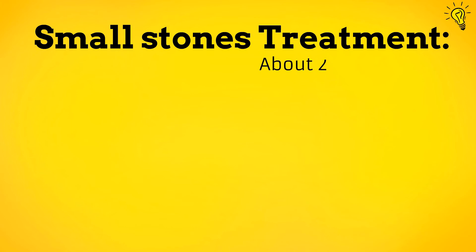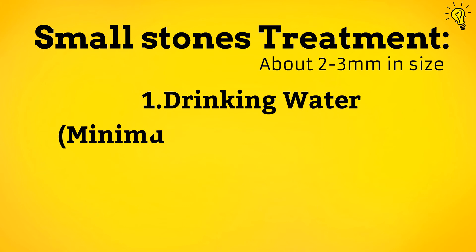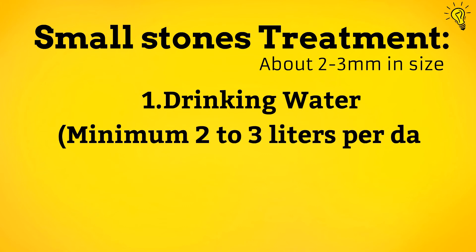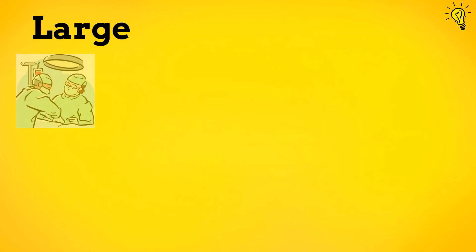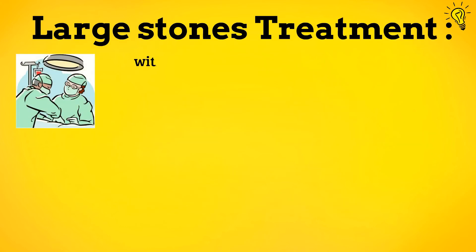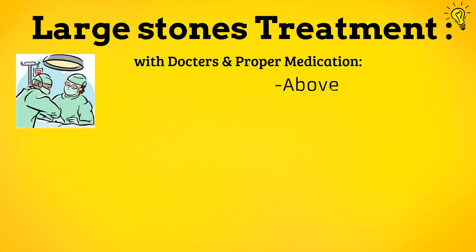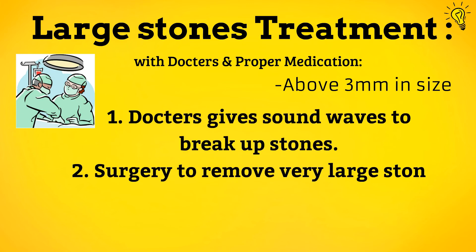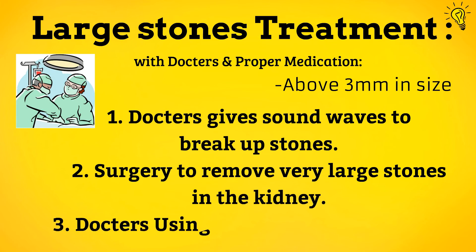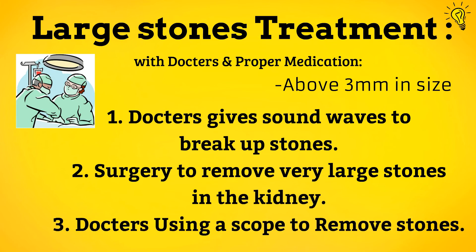How to pass small stones through urine: 1. Drinking water — minimum 2 to 3 liters per day. 2. Pain relievers. 3. Doctor medication. For large stones, proper medical treatment is needed as they can get stuck in the urinary tract. Treatment options include: 1. Doctors give sound waves to break up stones. 2. Surgery to remove very large stones in the kidney. 3. Doctors using a scope to remove stones.